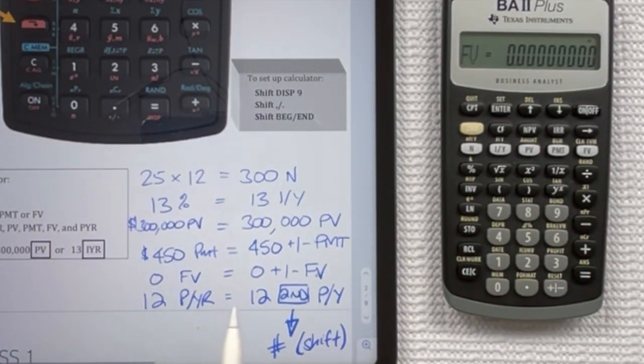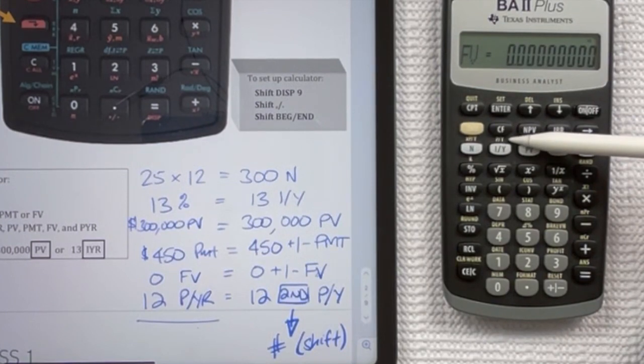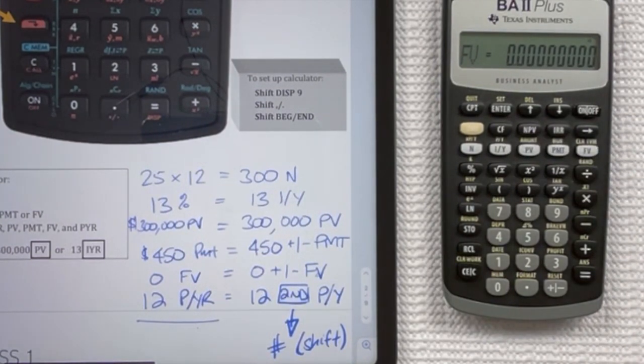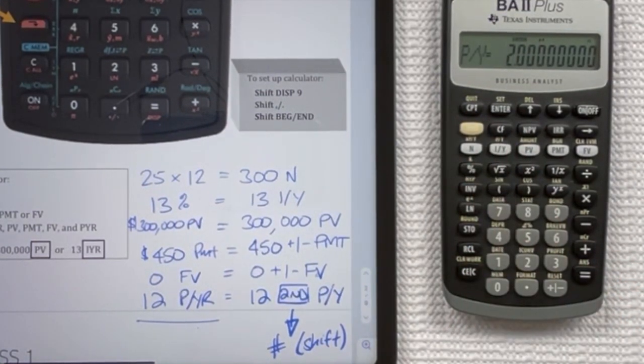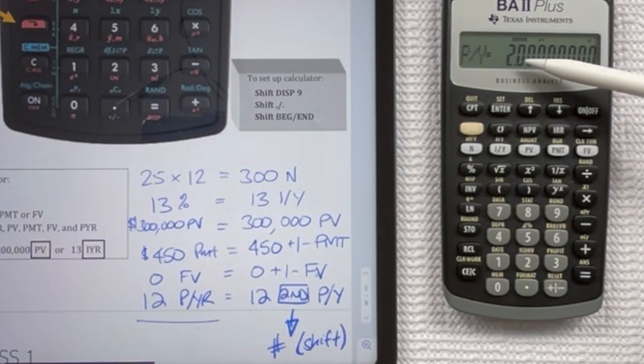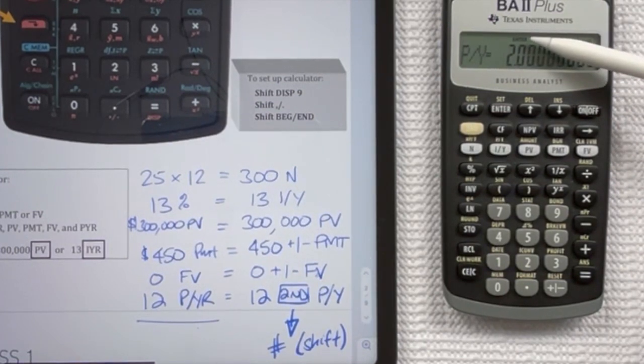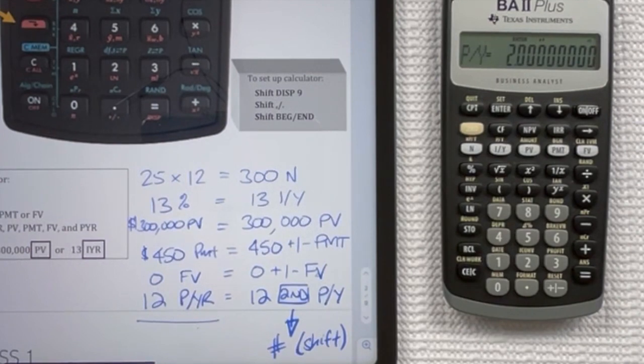And if you had 12 that you wanted to put in for your PYR, so 12 periods per year with this calculator, it's above the IY, and it's just PY instead of PYR. So you're going to hit your second function and PY, and you see that I have a 2 in there, and the enter has lit up here above it. So it tells you that you can change it if you want, we want to.